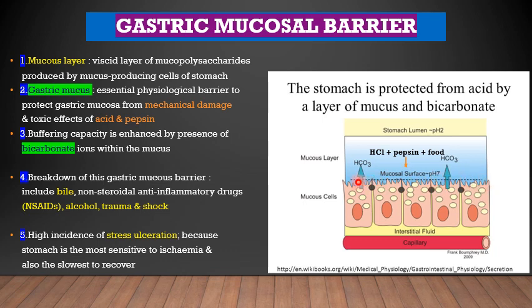The breakdown of this gastric mucosal barrier — such as by bile, non-steroidal anti-inflammatory drugs, alcohol, trauma and shock — will lead to surface erosions and ulceration. The high incidence of stress ulceration in the stomach is because the stomach is the most sensitive organ to ischemia, and it is also the slowest to recover from this assault or ischemia.